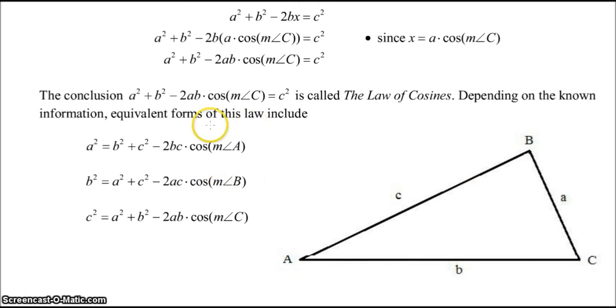So if you're looking for an unknown side, say C squared, it's equal to A squared plus B squared, which looks kind of similar to the Pythagorean theorem, but we subtract 2AB cosine of the measure of angle C.